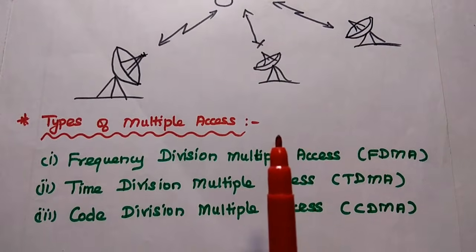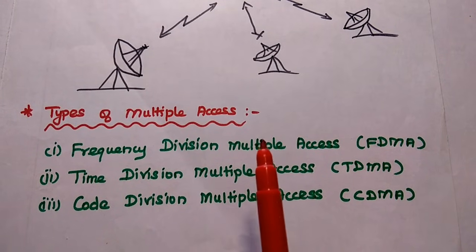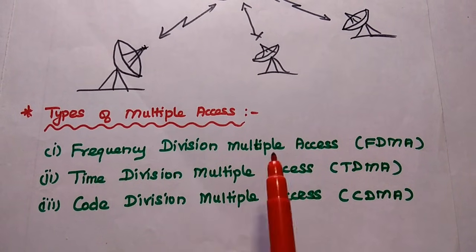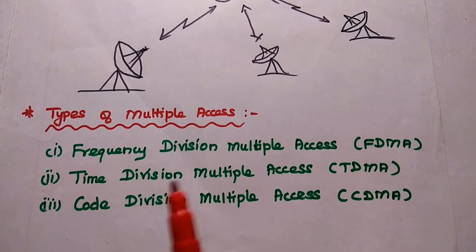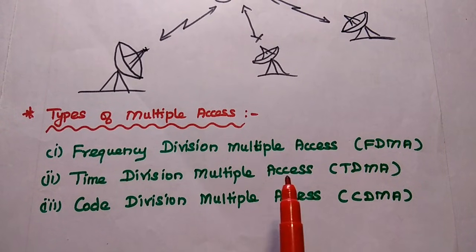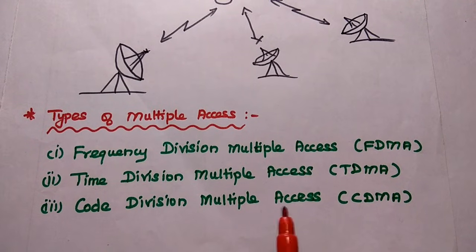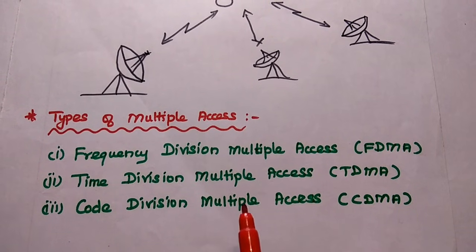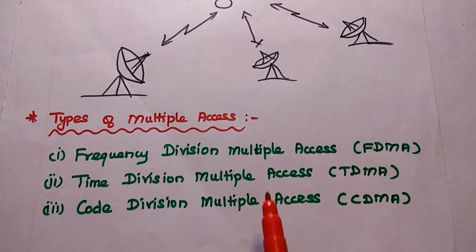There are three basic types of multiple access techniques available: Frequency Division Multiple Access, simply FDMA; Time Division Multiple Access, TDMA; and Code Division Multiple Access, CDMA. Now we are going to discuss the comparison of these three types.